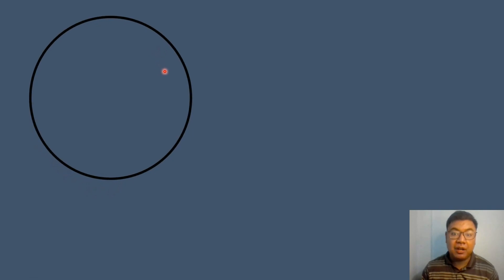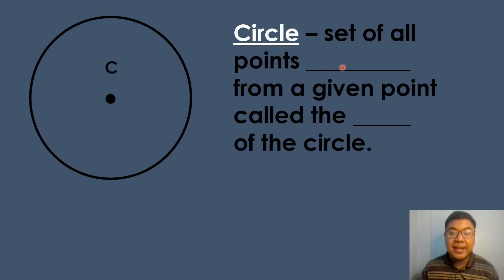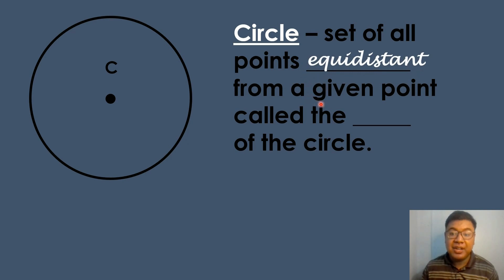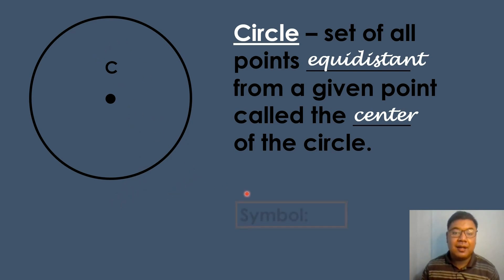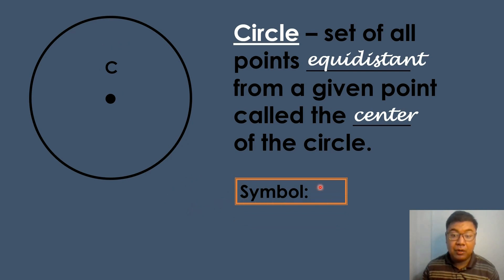Let's have first the definition of circle. When we say circle, a circle is a set of all points which is equidistant from a given point called the center of the circle. We can name a circle by its center. So in this case, the name of the circle is written with the circle symbol followed by its center — this is read as circle C.